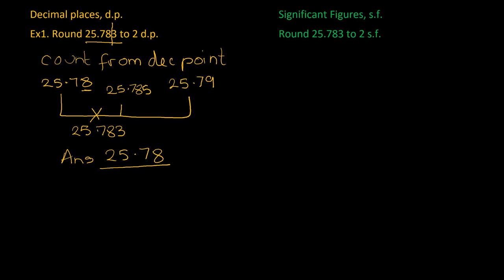Now we're going to switch and look at how we would tackle this same question but rounded to significant figures. With significant figures, instead of counting from the decimal point, we start with the first number that is not zero. In this case, 2 is the first number that's not zero, so the second significant figure is the 5, and so this time our line goes in there.